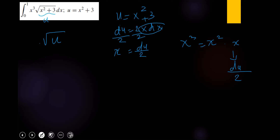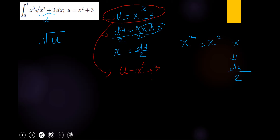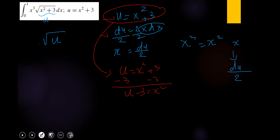For x squared, du cannot help, but u can. From u equals x squared plus 3, subtract 3 from both sides to get u minus 3 equals x squared. So we substitute x squared with u minus 3.